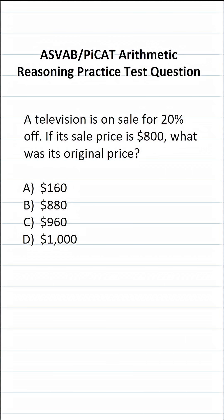This arithmetic reasoning practice test question for the ASVAB and PiCAT says, a television is on sale for 20% off. If its sales price is $800, what was its original price?